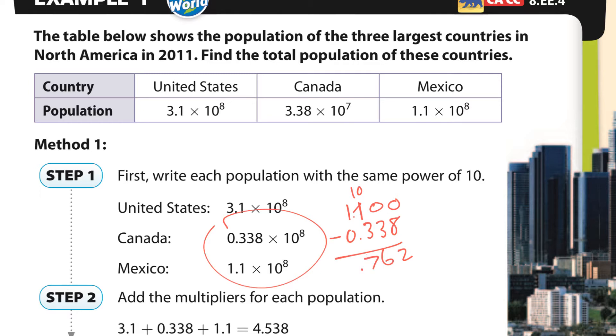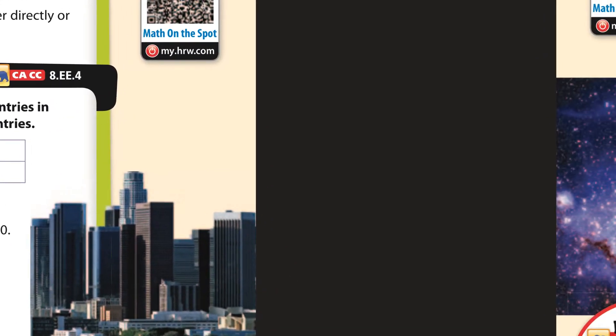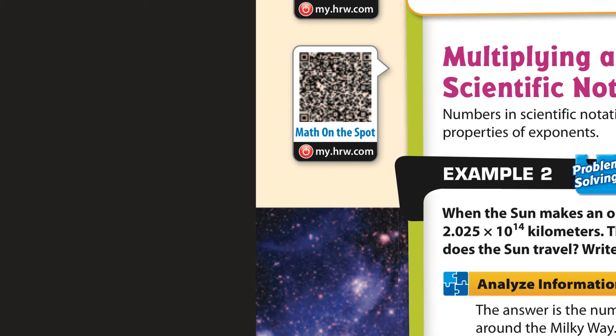So this is 0.762 times 10 to the 8th. Now, let me bring that over here. If I have 0.762 times 10 to the 8th, then I need to actually be 7.62 times 10 to the 7th.